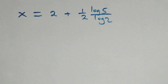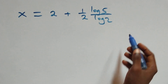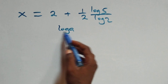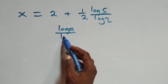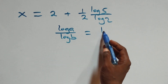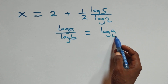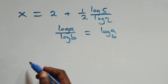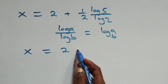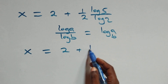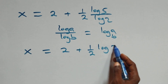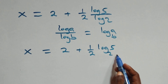We apply the change of base formula, where log A over log B equals log A to base B. So log 5 over log 2 becomes log base 2 of 5, giving x equals 2 plus one-half times log base 2 of 5.